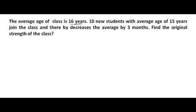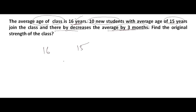The next problem: the average age of a class is 16 years. We do not know the strength of the class. Ten new students with an average age of 15 years join the class. So we have two individual group averages: 16 and 15. By mixing them, the total average decreases by three months — from 16 years it becomes 15 years 9 months.